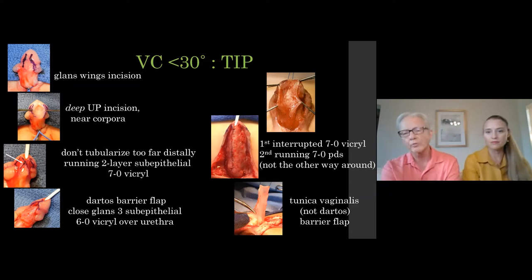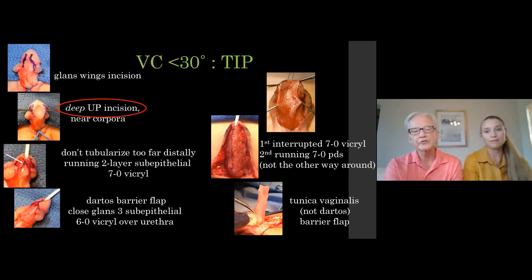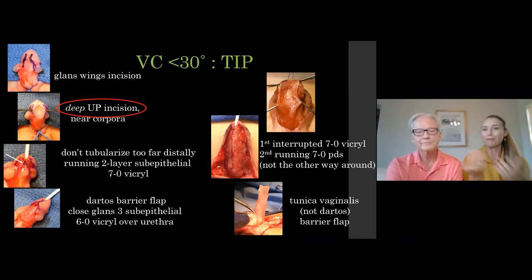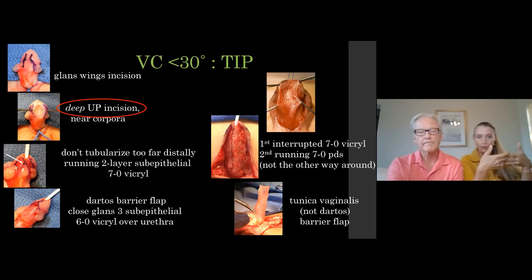For a proximal TIP, we do an interrupted initial layer and a running second layer — not the other way around — because it's important to get good alignment and sealing of the neourethra. Instead of dartos, in all proximal hypospadias we use tunica vaginalis. The single most important thing to remember for TIP is that the incision needs to be deep — all the way to the corpora so it's shiny corpora you're on top of. Any web tissue that's part of the urethral plate needs to go away. It's crucial.